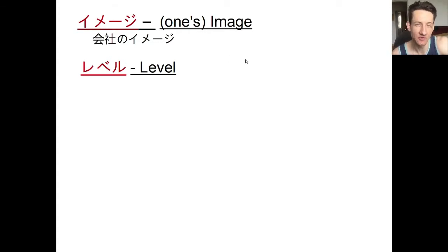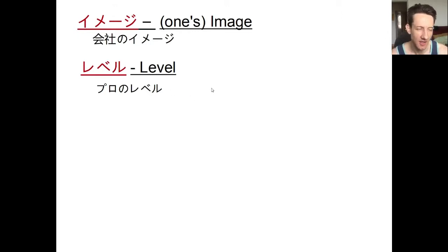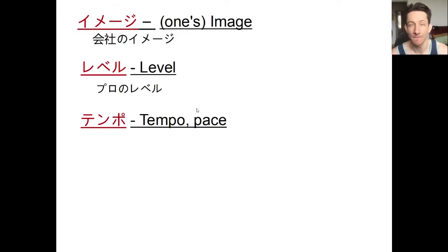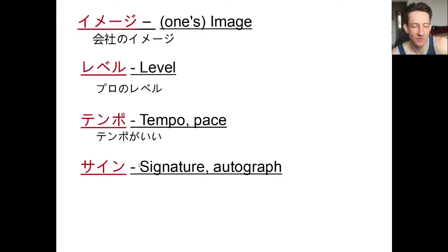Next, レベル means 'level' — not the adjective, but like a level in a video game or in a figurative sense. プロのレベル means he's at a pro level, like a pro-level player. Next, テンポ means 'tempo' or 'pace.' If you want to describe someone who's really hardworking, we can say テンポがいい — 彼女はテンポがいいね, she's really productive, hustling around the office getting things done.